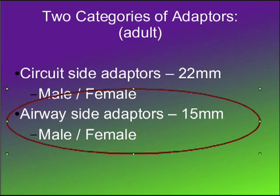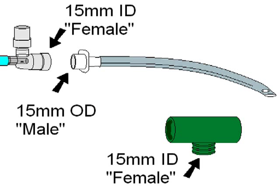Now, what about the other category — the airway side adapters, the 15 millimeter? A good example might be the Ballard inline suction catheter elbow, which can connect to an endotracheal or tracheostomy tube. The end of the trach tube itself has an adapter that's a 15 millimeter OD male because it fits into a 15 millimeter ID female. Also, the center port on the Briggs T adapter has a 15 millimeter ID.